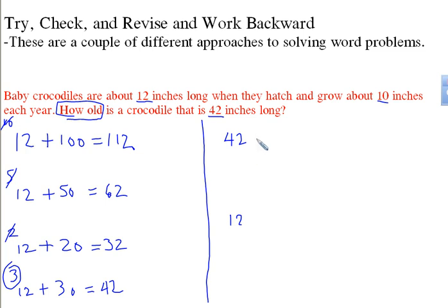All we have to do is subtract 10. That would be one year, and that would be 32. Then we subtract 10 again. That would be the second year, so it would be 2 years, and that would be 22.